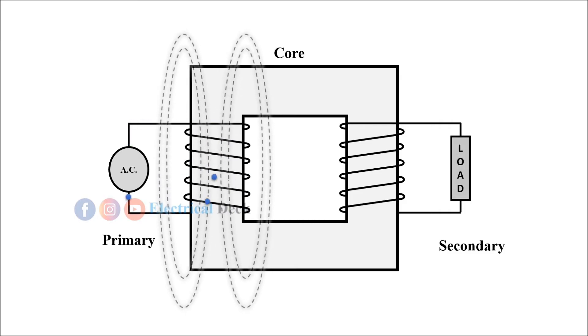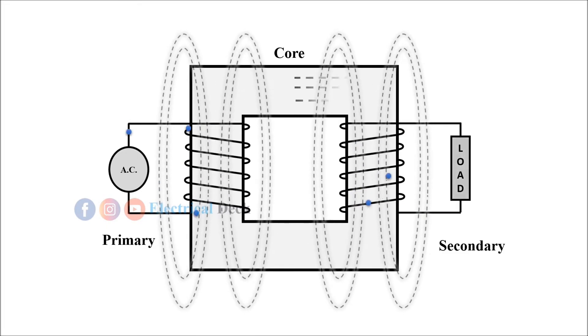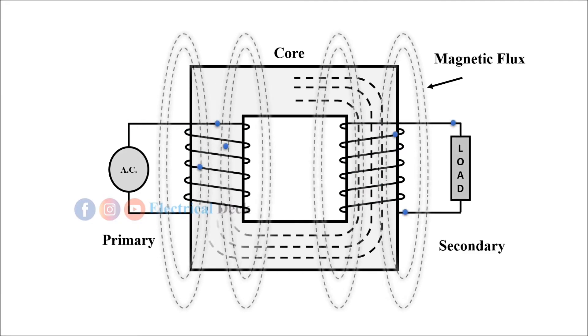When a transformer is loaded, current flows in the secondary winding and out to the load. This secondary current is due to the induced secondary voltage set up by the magnetic flux created in the core from the primary current. Let us see how a transformer behaves when a load is connected to it.